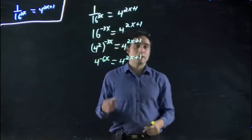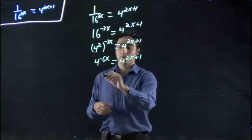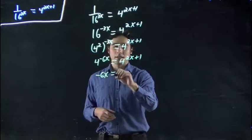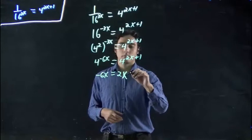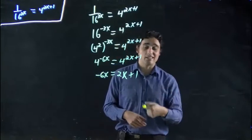Bases are the same, means the exponents must be equal. So, I can write minus 6x equals 2x plus 1. Even if I write it messily, I can still write it.